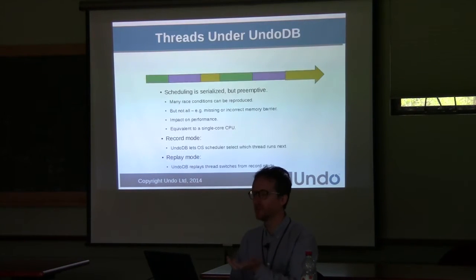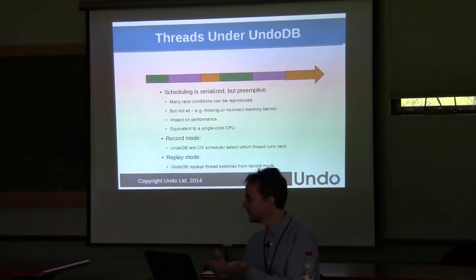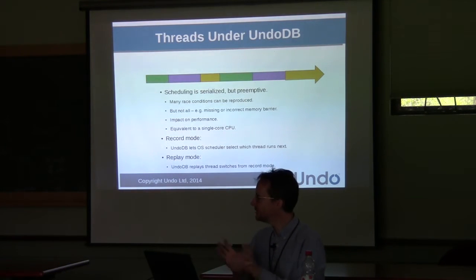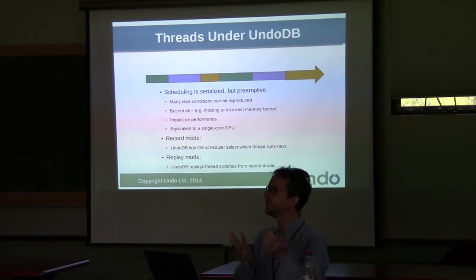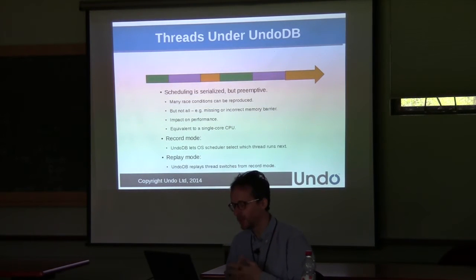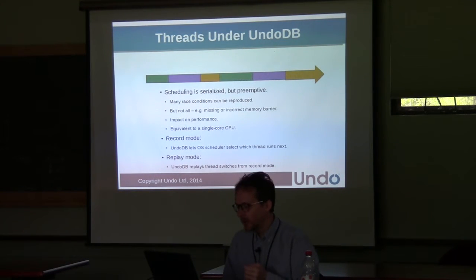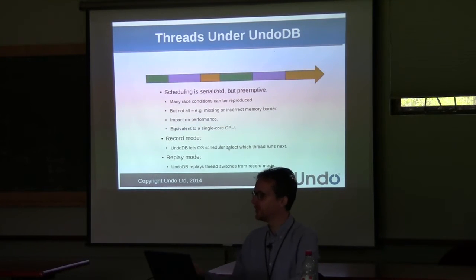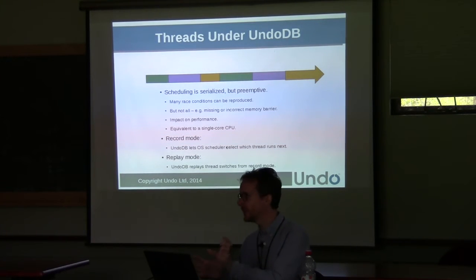As I said earlier, we serialize threads — it's equivalent to running on a single-core CPU. As we know, running on a single-core CPU means some really complicated race conditions can't happen. This means UndoDB hides certain bugs, which is a shame. But you can still find other bugs, as you saw in the deadlock problem. In record mode, we let the operating system scheduler select which thread to run next. In replay mode, the OS kernel is not involved — we replay exactly what happened the first time.